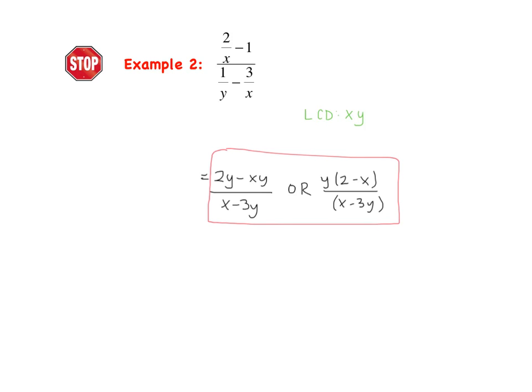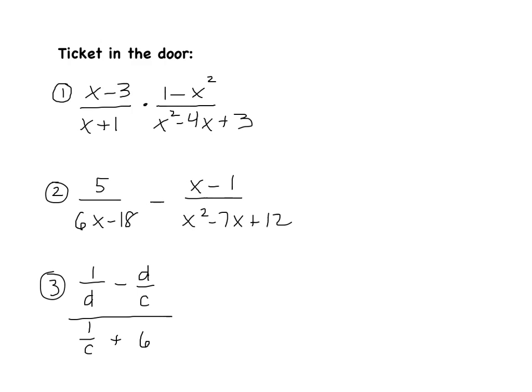Here's what I got as my answer. I used method 2: I identified the LCD of all my mini-denominators to be XY, and multiplying every term by XY gets you down to that answer. If you have any questions, make sure you ask about them in class tomorrow. One last thing: we have a ticket in the door tomorrow, so to receive full credit for these notes, you need to complete the following examples. Try these as best you can. Otherwise, have a great day, guys. Bye.